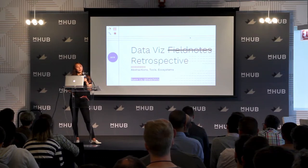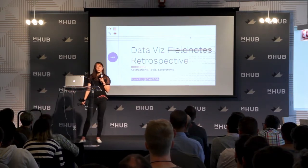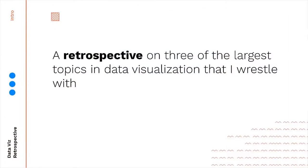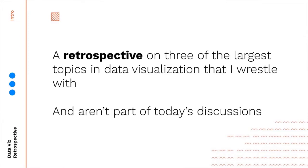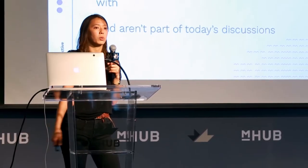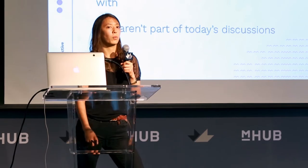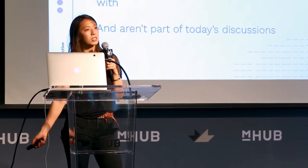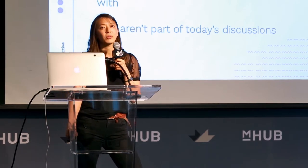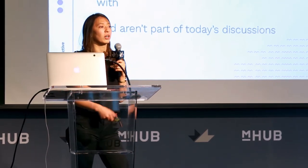I'm going to be covering three main topics: abstractions, tools, and ecosystems. These three topics are the ones that I wrestle with the most in my job today. They're not part of today's discussions in data visualization, and part of why they're not is because to have nuanced discussions around these topics we need to start building a shared vocabulary. Part of my goal today is to go through these three topics so we have at least the baseline for a shared vocabulary as we walk through them.